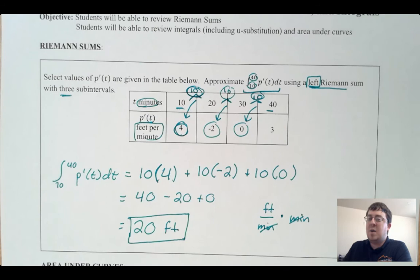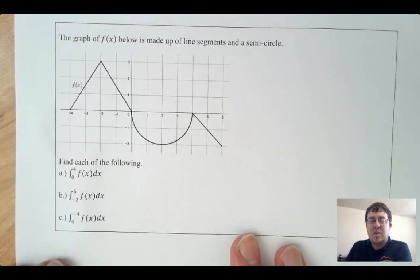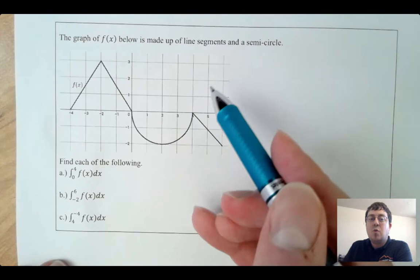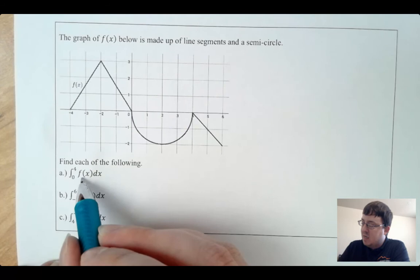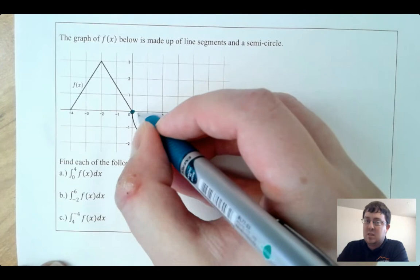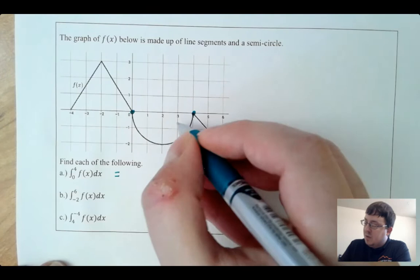Now let's talk about area under curves and integral interpretations using a graph instead of a table. I want to find three different definite integrals using this graph. Remember, the integral represents the area between the curve and the x-axis. So if I want to find the integral from 0 to 4 of f(x) dx, I'm going from here to here, and I really want the area of this semicircle right here. This is a half circle — the area of a circle is π r².